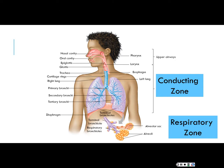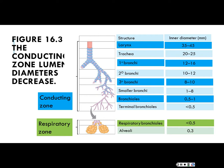Looking at the airways more closely at lumen diameter, the diameter of structures actually decreases the deeper we get into lung tissue. We can correlate the same connections about diameter, resistance, and flow like we did with blood vessels. The diameter is greatest at the larynx, so resistance would be the least there.